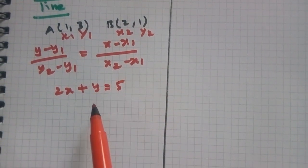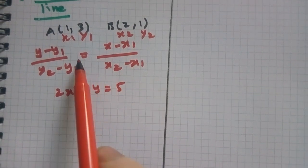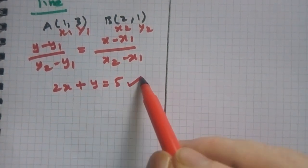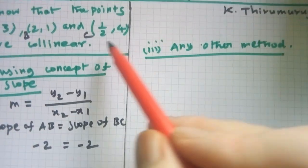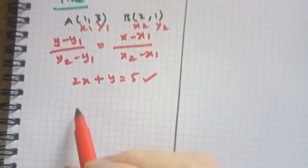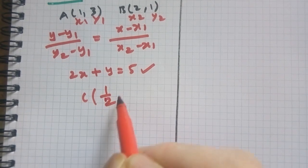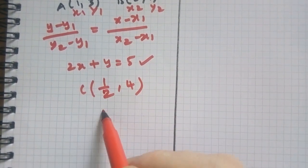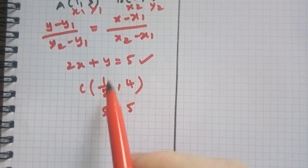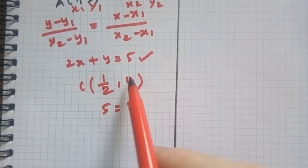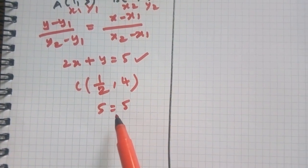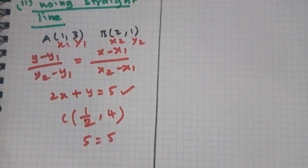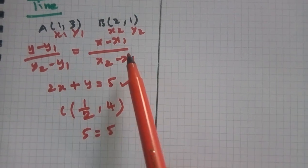We are getting the straight line using the two-point formula. Now checking the third point C (1/2, 4) on the straight line. Substituting x3 = 1/2, y = 4, we get 5 = 5. This confirms the three points are lying on the straight line, so they are collinear.